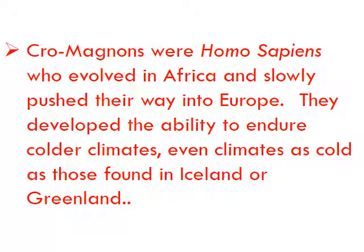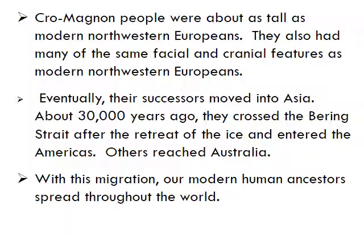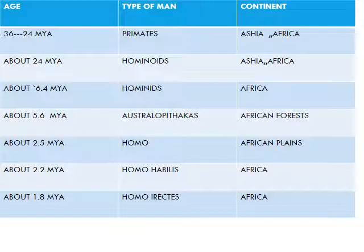Cro-Magnons were Homo sapiens who evolved in Africa and slowly pushed their way into Europe. They developed the ability to endure colder climates, even as cold as those found in Iceland. Cro-Magnon people were about as tall as modern north-western Europeans and had many of the same facial features. Eventually these successors moved into Asia about 30,000 years ago, crossed the Bering Strait after the retreat of ice, and entered the Americas; others reached Australia. With this migration, modern human ancestors spread throughout the world.